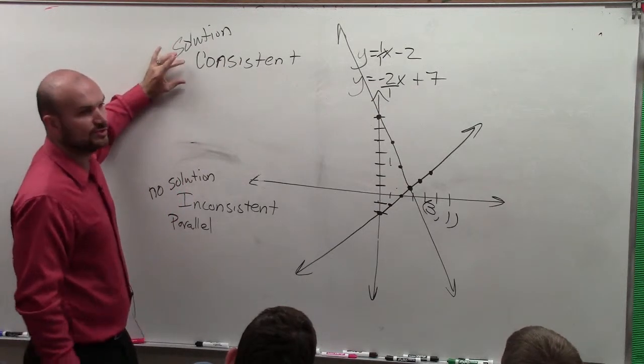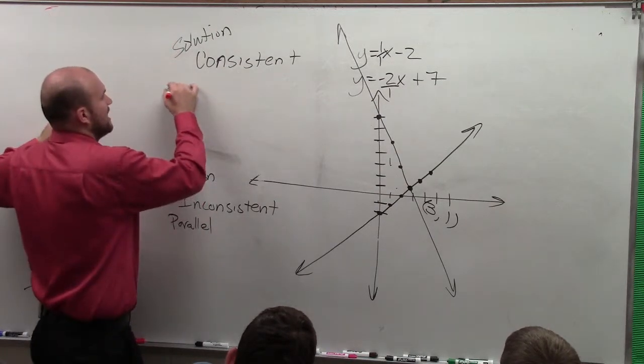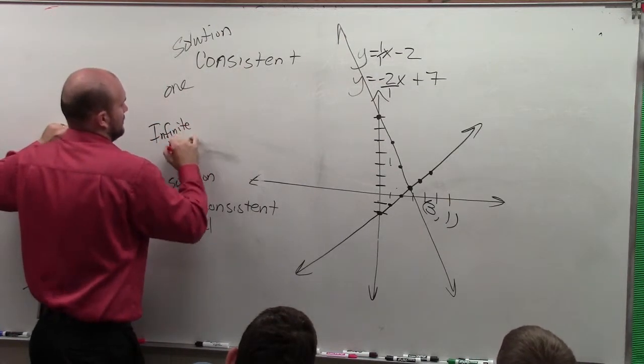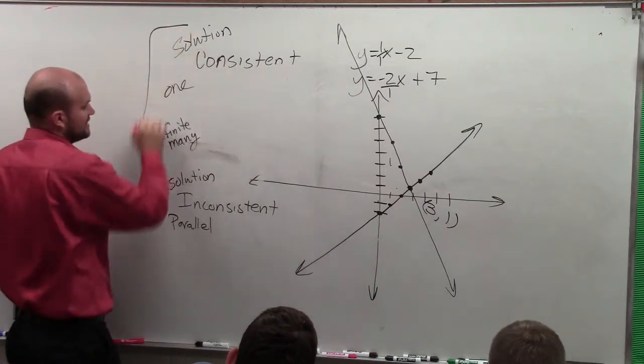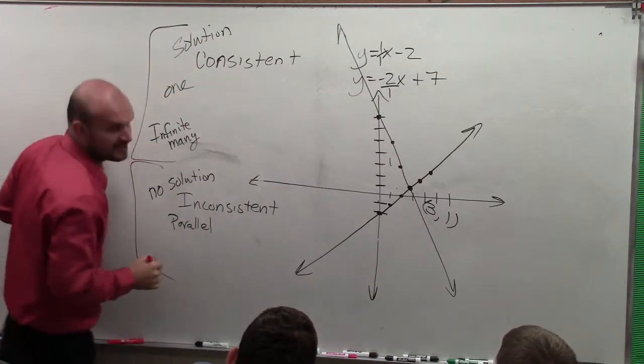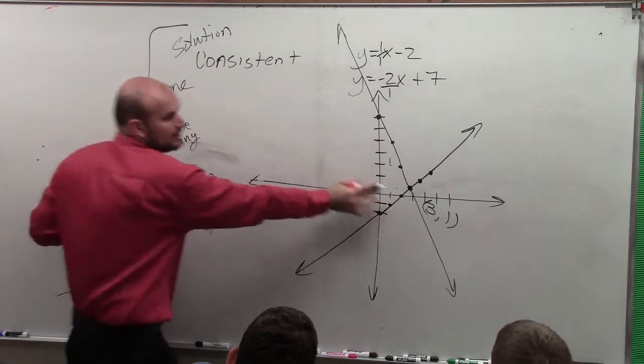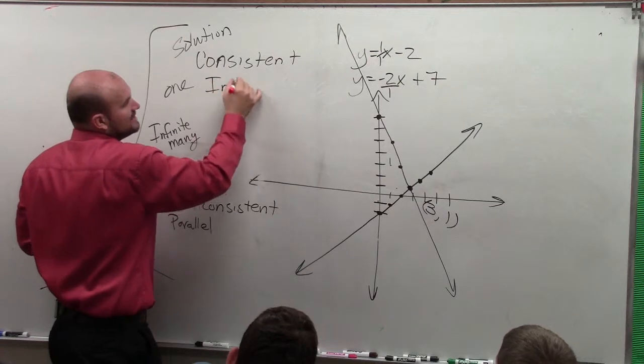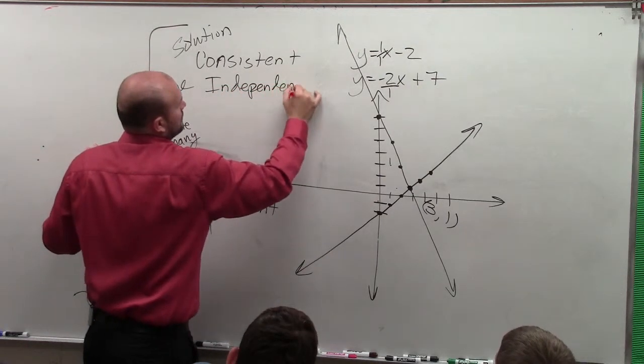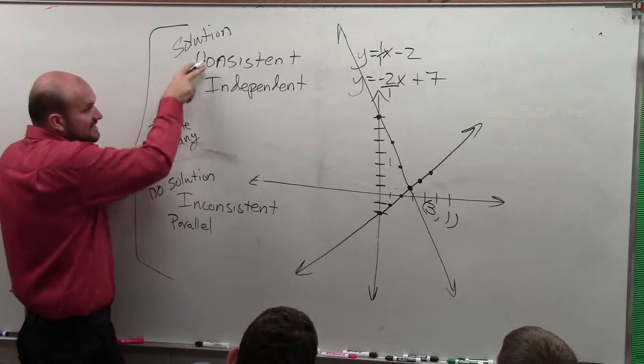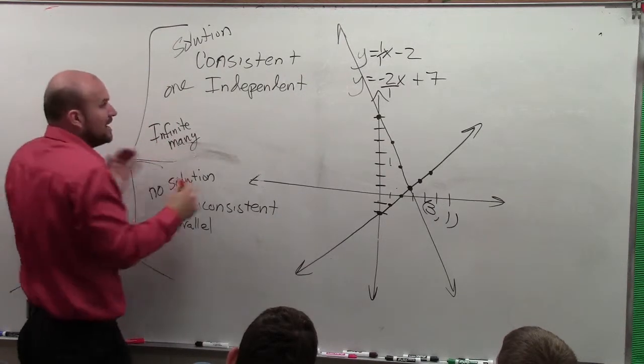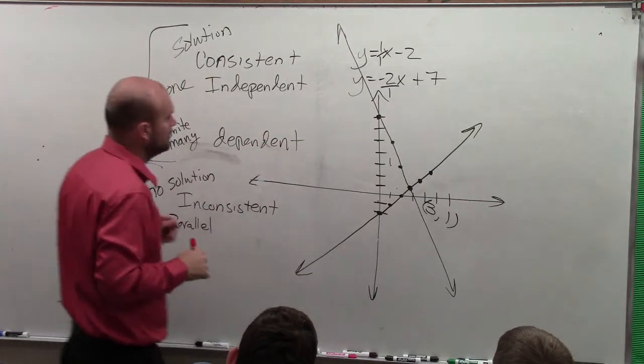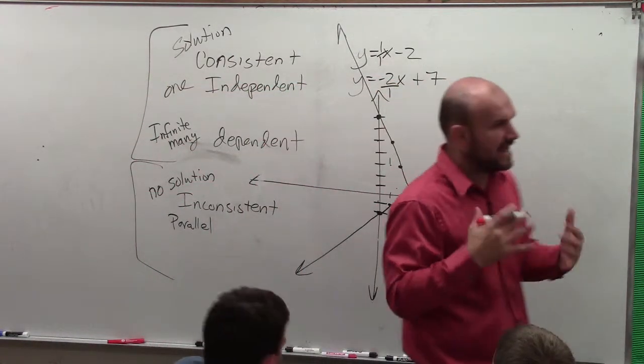But now, let's think about what are the two ways they intersected. They either intersected at one point or infinite many. So it's either consistent, ladies and gentlemen, or it's inconsistent. It's consistent if it intersects at one, like it does here. If it's consistent at one, it's what we call independent. If it's consistent at infinite many, well, that means it's the same line—it's what we call dependent. You are going to need to know those categorizations.